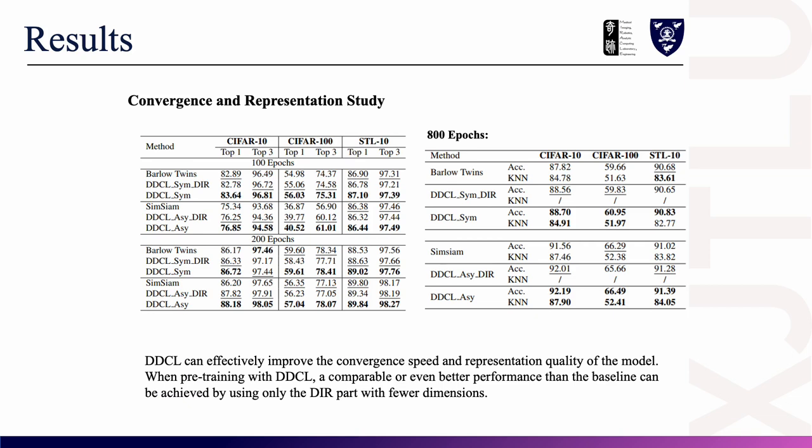In the results section, I will describe the performance of DDL in terms of several properties. First, I will provide a description of DDL in terms of convergence and quality of representation. The table on the left demonstrates that DDL can considerably boost performance with small epoch settings. The table on the right indicates that DDL enables the model to extract superior features under sufficient training. Interestingly, comparable or even better performance than the baseline can be achieved by using only the DIR part with fewer dimensions.